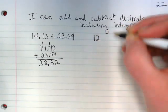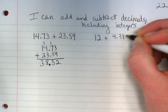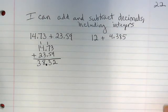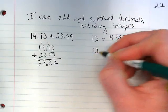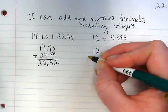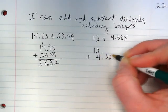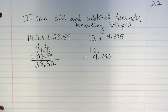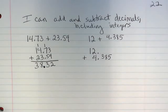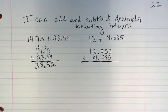You might also see problems that look like this. As you know, we love our invisible things in math — this twelve does have a decimal; it just happens to be right after it. So if we're going to line these two up, it looks a bit funny to be adding twelve-point-zero plus four point three eight five, so we can put zeros in as placeholders so that each place has something to be added with.